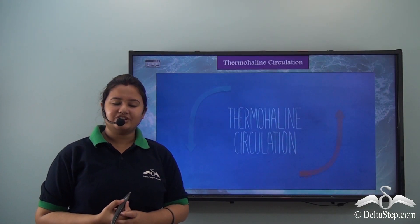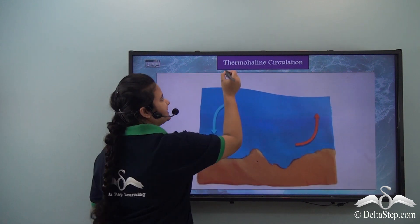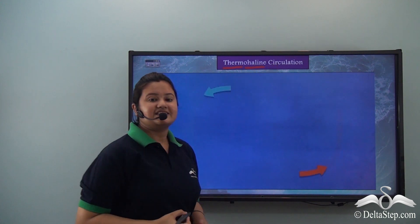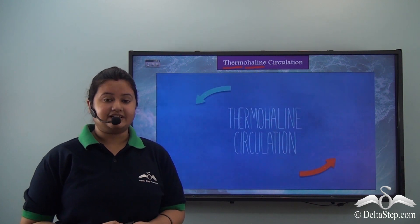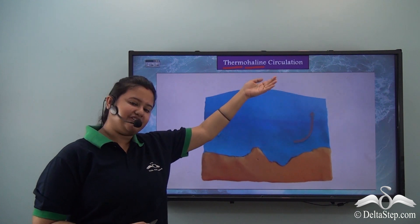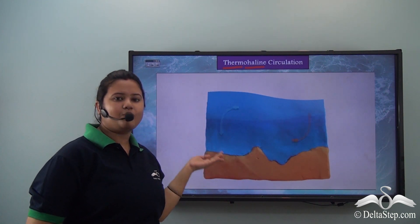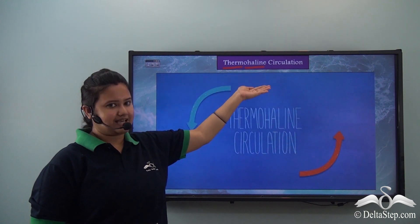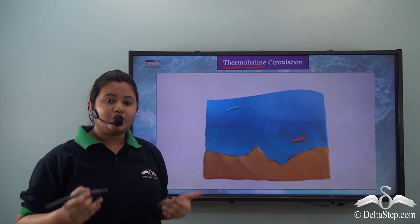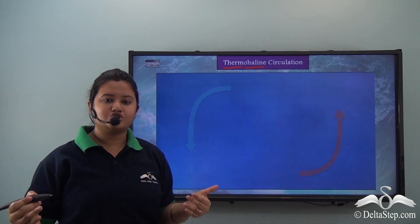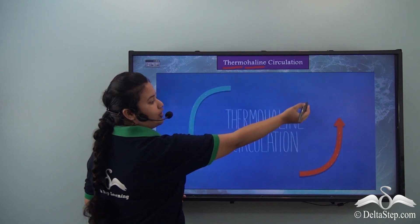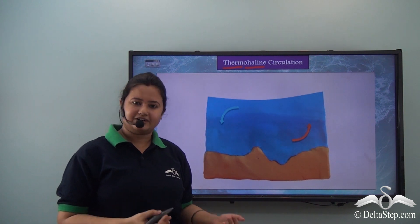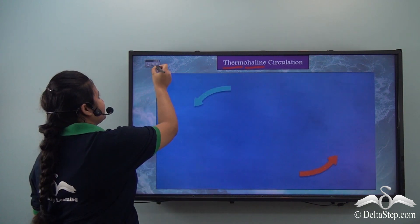We will understand what thermohaline circulation is. The word 'thermo' means temperature and 'haline' means salinity or salt content. Therefore, thermohaline circulation refers to the deep water circulation which is based on both temperature and salinity — specifically, the vertical movement of ocean currents, that is the rising of warm water and sinking of cold water.